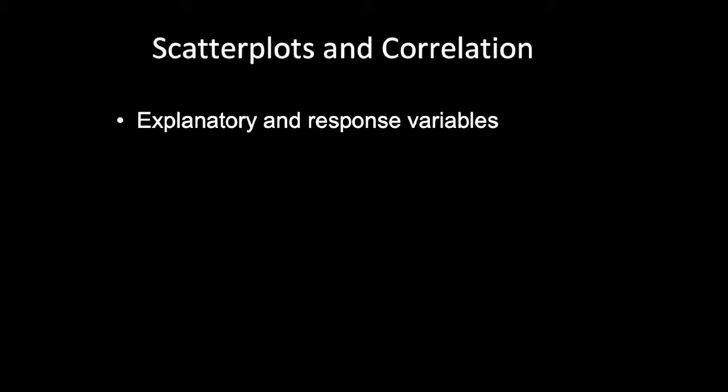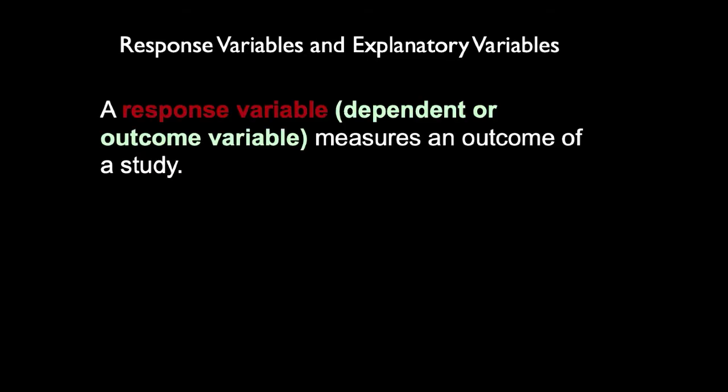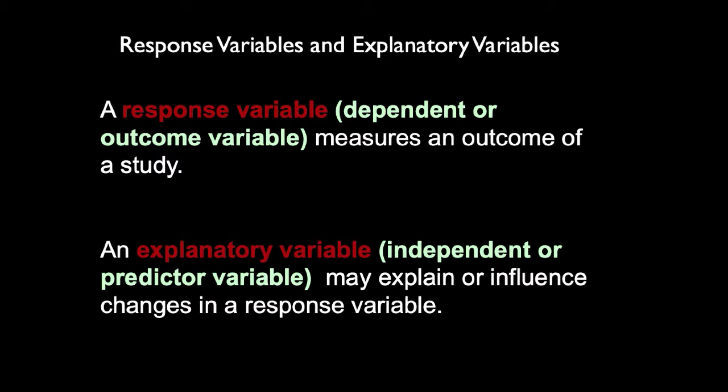Hi everyone. In this video I am going to talk about scatter plots and correlation. Under this I will be explaining explanatory and response variables, scatter plots, and correlation. A response variable, also known as the dependent or outcome variable, measures an outcome of a study. An explanatory variable, also known as the independent or predictor variable, may explain or influence change in a response variable.